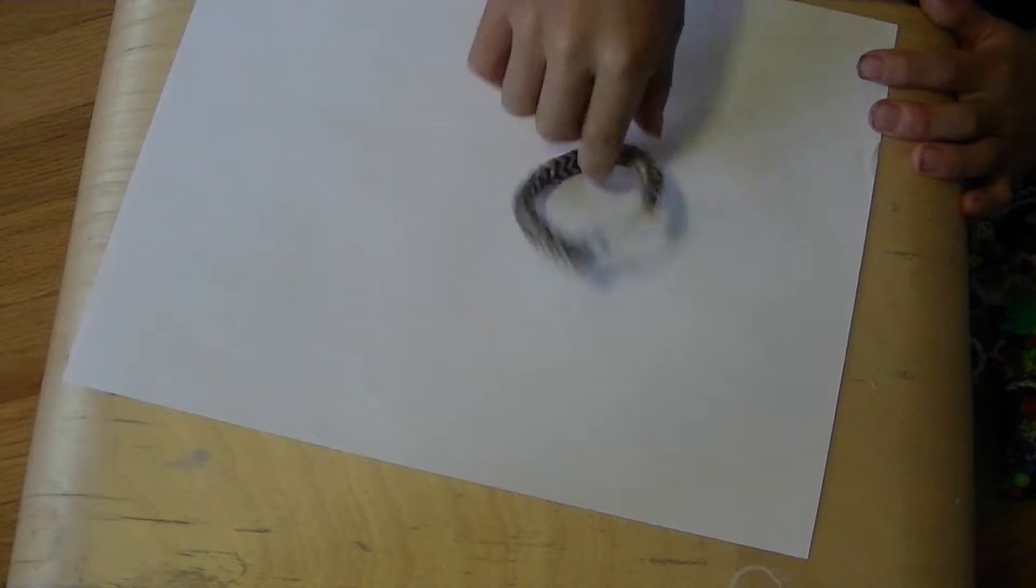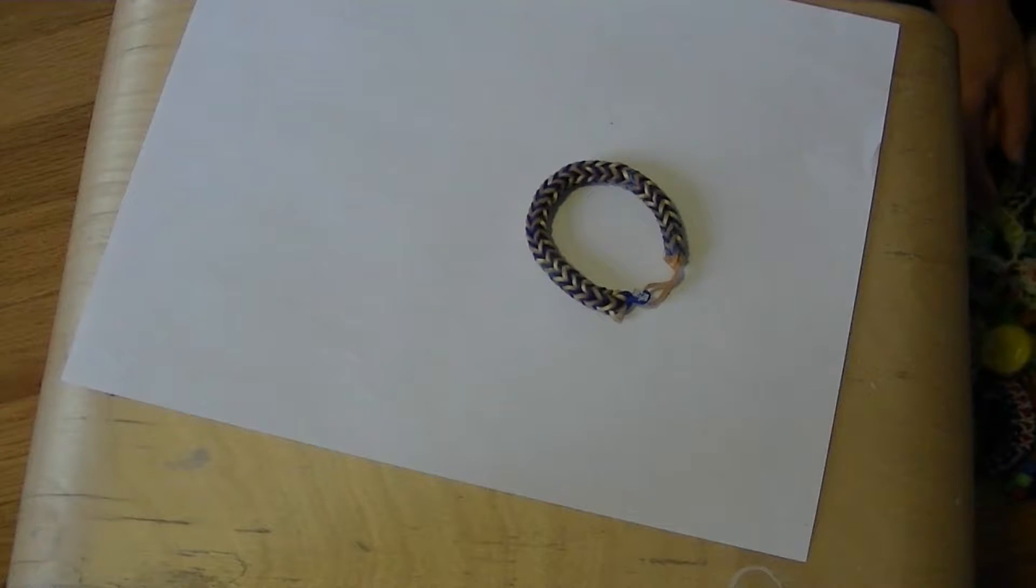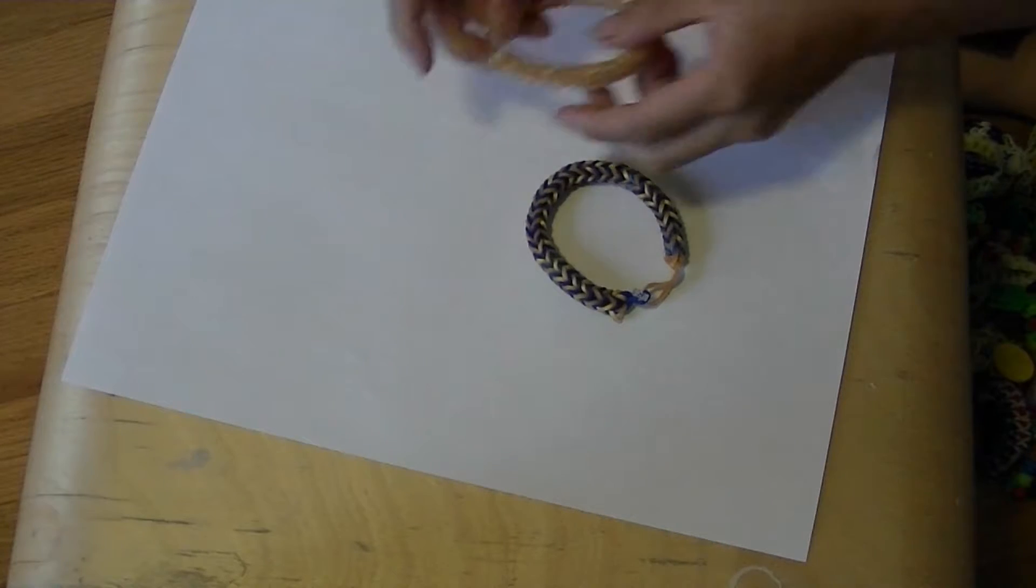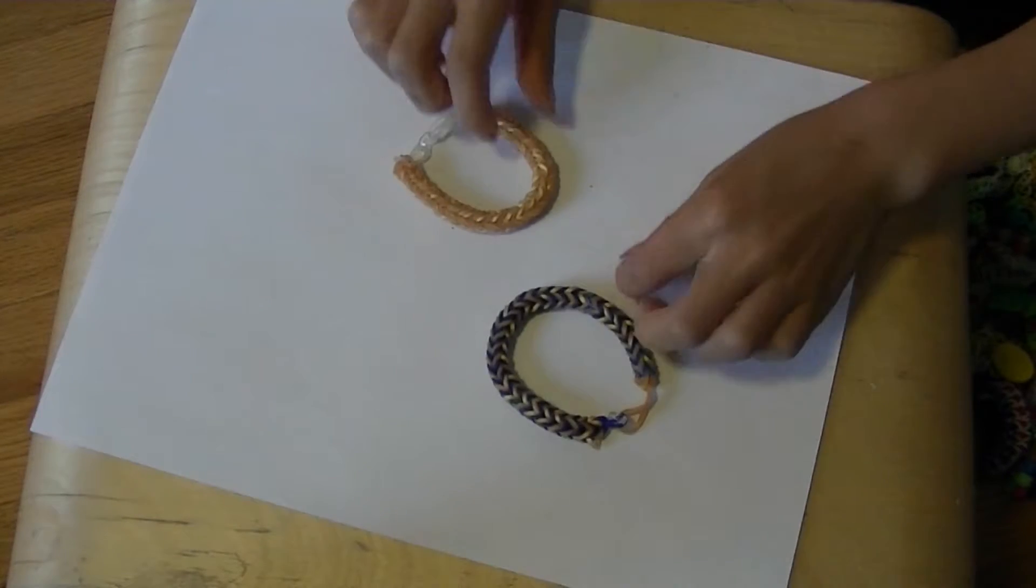The next one is a three pin fish tail, it's blue and gold. Let me try to find my other one. There it is. This is the glitter gold mixed with the metallic gold. These are two tri-fishes.